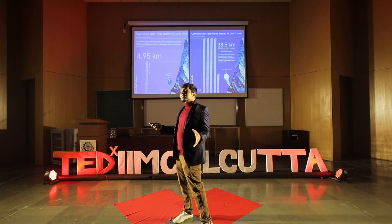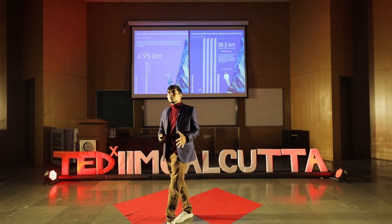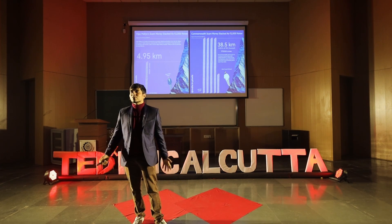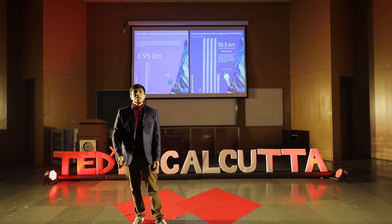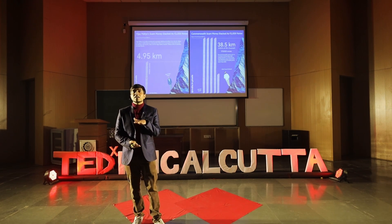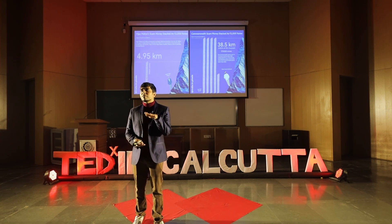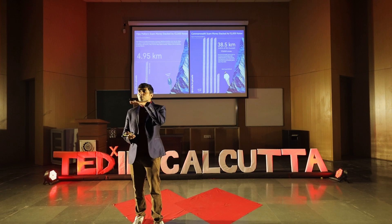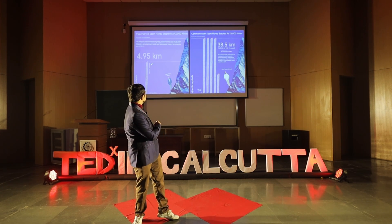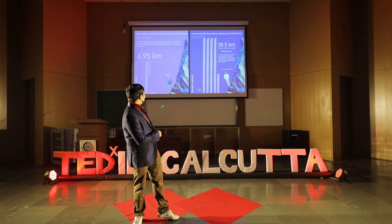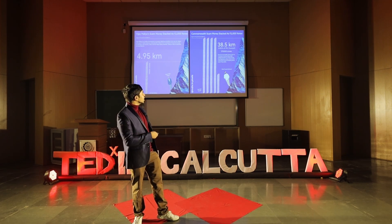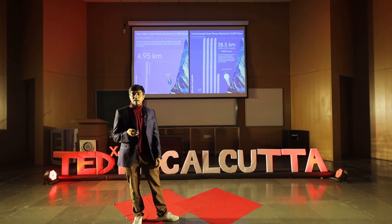Sometimes visualization helps you capture things like corruption money — something so large you can't easily comprehend it. Here we compare stacks of corruption money to the Himalayas. If you stack 2,000-rupee notes one by one, how many Himalayas would that cover? So this is one Himalaya, half of the Himalayas — and here is a gentleman with three and a half Himalayas' worth.